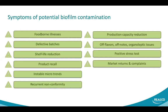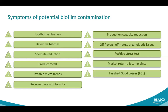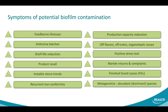Market returns and complaints are interesting — sometimes your quality control does not show any issue on the finished product, but when the product goes to market under different temperature or time conditions it can become defective, generating complaints. If you are not able to show biofilm contamination in your quality process, market returns or complaints may give you useful information. Finished good losses, and metagenetic testing — if you see that some germs are predominant compared to others in your finished product, meaning one germ is taking over, this can also be a symptom of biofilm contamination.